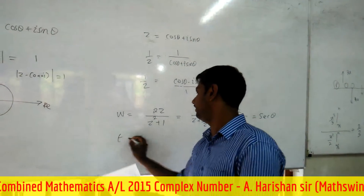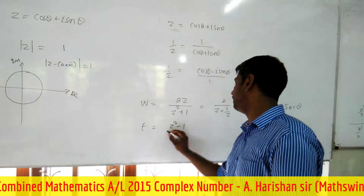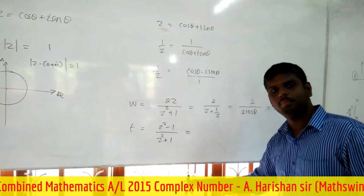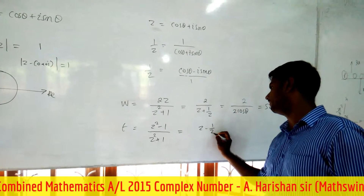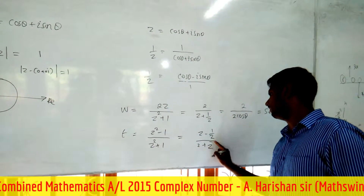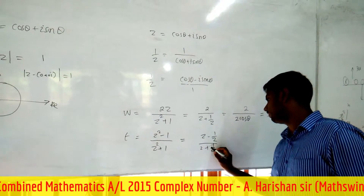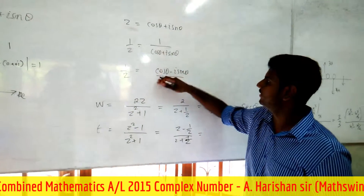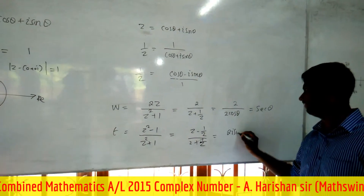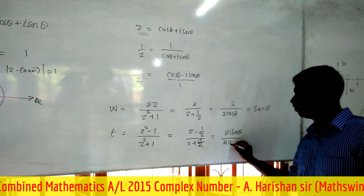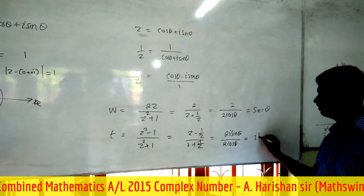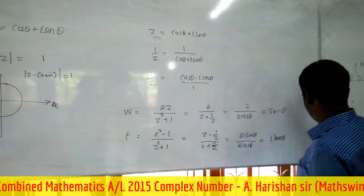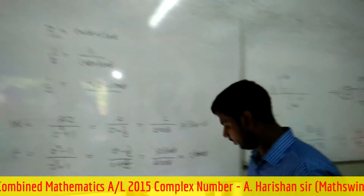And z − 1/z = 2i sin θ. So w = 2cos θ divided by 2 = cos θ, and t = z minus 1/z divided by 2i, giving t = i tan θ.